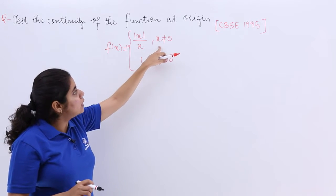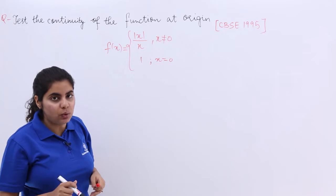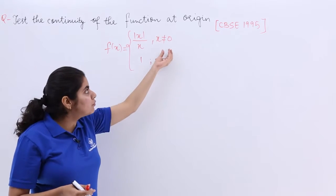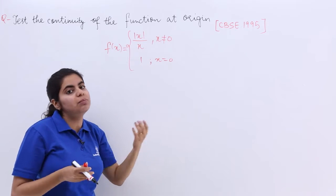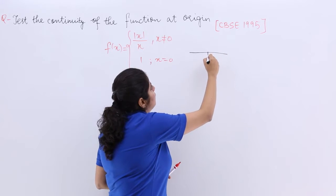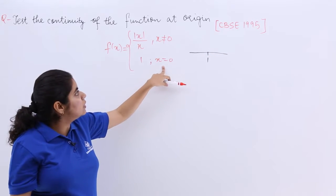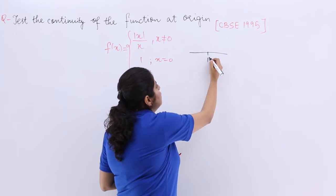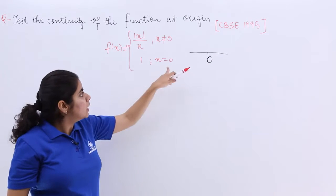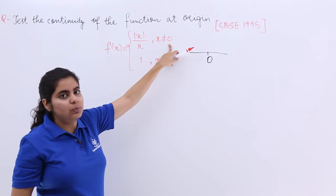Now we know that when x is not equal to 0, that means it takes into account the left hand limit and the right hand limit both. Either we are talking about equal to 0, or we are talking not equal to 0.